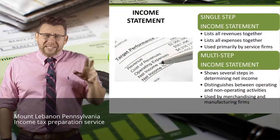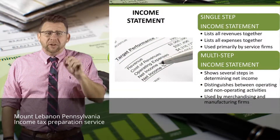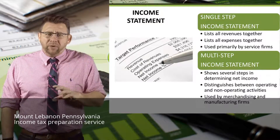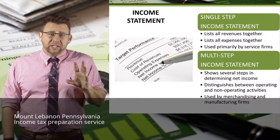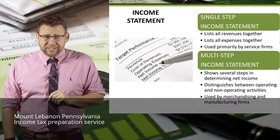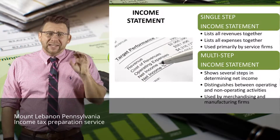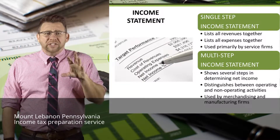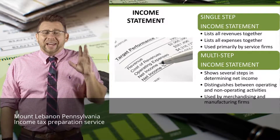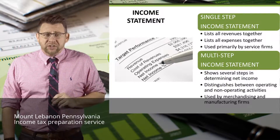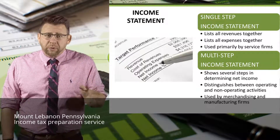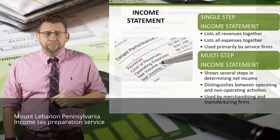A multi-step income statement still lists revenues and expenses, but it separates operating revenues and expenses from non-operating revenues and expenses, as well as divides the accounts into important subtotals that highlight areas of importance for investors and creditors. The subtotals include gross profit and operating income.